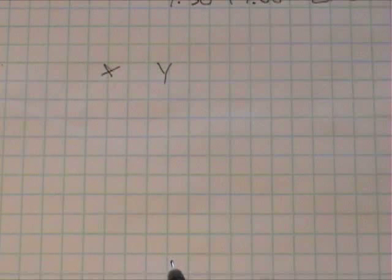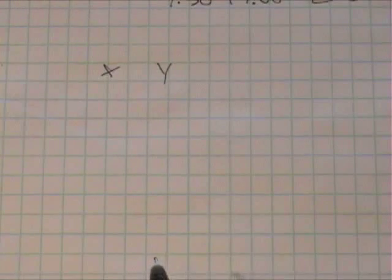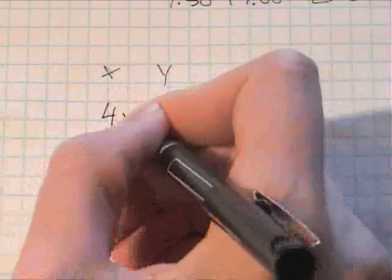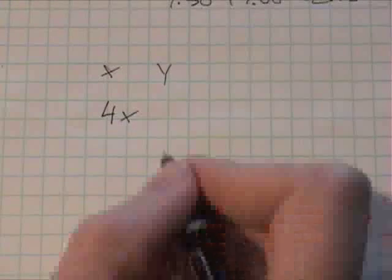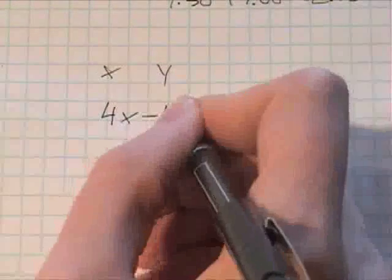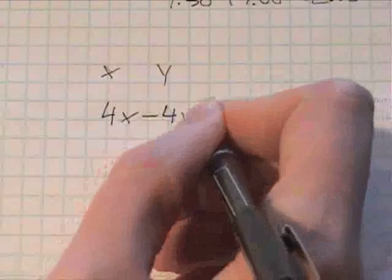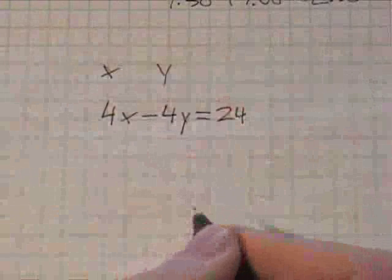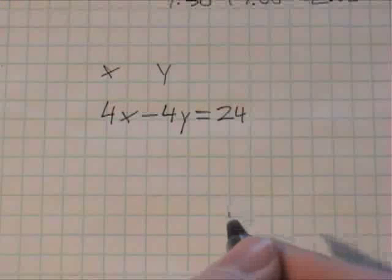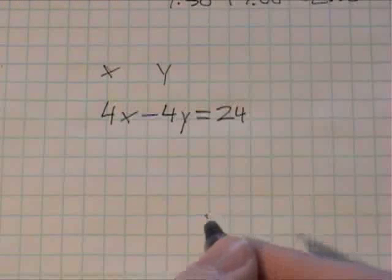Find two numbers such that four times the first number, let's say x is the first number, so four times the first number minus four, so subtract four times the second number, which is y, should equal 24. That's one of them. Now it says 'and', so we're starting a new equation. And twice the first number plus the second number should equal 30.